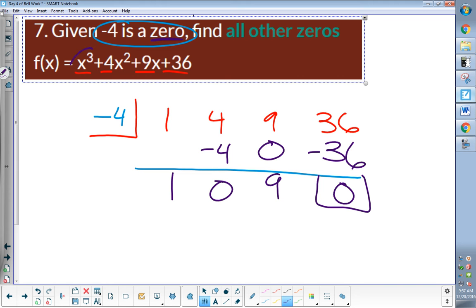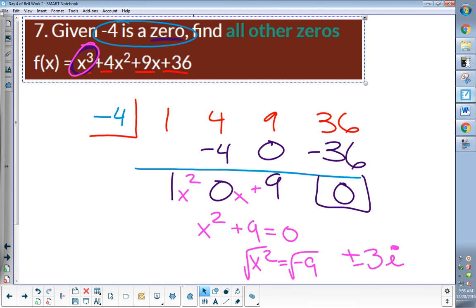This was an x cubed problem. It was to the third power. So if it was to the third power, what is this 1, 0, 9 going to be? x squared, 0x, and a number. Or in other words, x squared plus 9. I need to solve that, so I'm going to set it equal to 0. Minus 9. Square root. Square root. What is the square root of negative 9? 3i plus or minus. So my answer was negative 4 from right here. And then plus or minus 3i. Remember, it's i because I took the square root of a negative.